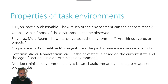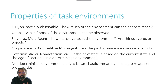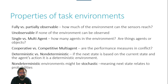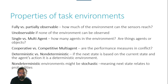Task environments have properties associated with them. They are potentially fully or partially observable — how much of the environment can a particular sensor observe and return findings from? There may be some things that can never be observed, so you may have an environment that is fully unobservable. You may have more than one agent in the same environment — are they agents or objects? And if there's more than one, are they cooperative or competitive — will they work together, or fight for resources enabling them to reach their goals?